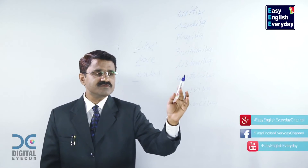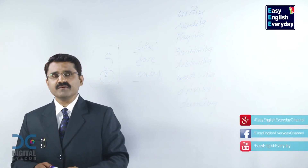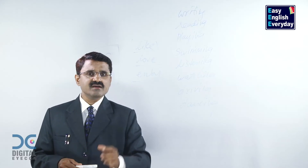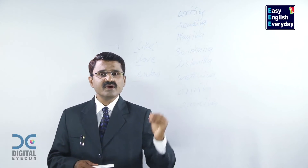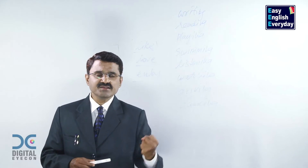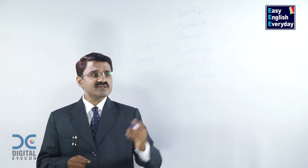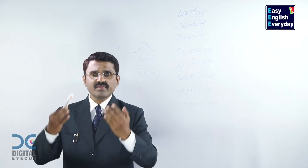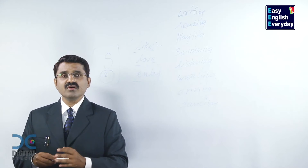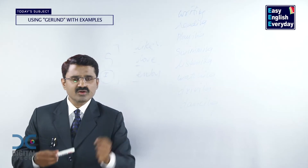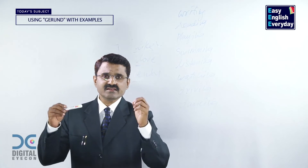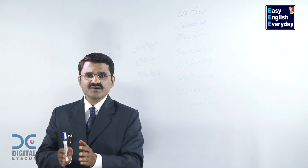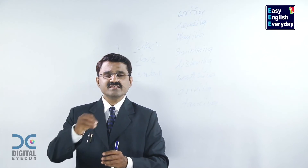All that you need is a good number of ING forms. If you have 100 ING forms, you can make 100 examples. Take 100 ING forms, multiply by 3, you can make 300 examples. Keep on making examples orally — not in written form. Don't go on jotting down or making written exercises; that is a very boring way of learning the language. We always insist on learning the language in an enjoyable, easy, and simple way.